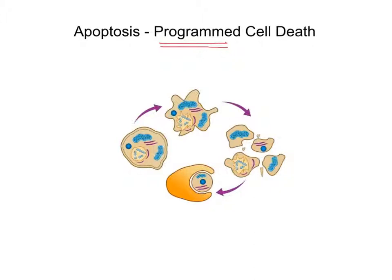If the cell has reached its maximum number of divisions, or if there's an error with the cell — maybe there's a replication problem in terms of the DNA, or maybe one of the organelles inside the cell is damaged — then the cell would ultimately undergo this triggered cell death.